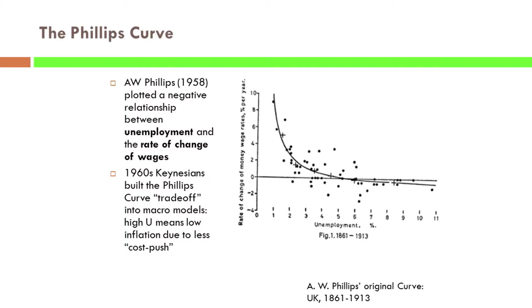This is Phillips' original curve. He doesn't have the inflation rate on the vertical axis — it's actually the rate of change of money wages, which is different. That's a relative price change, not a general price change.